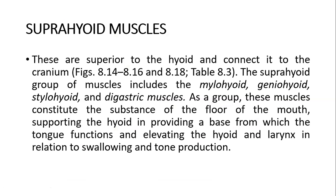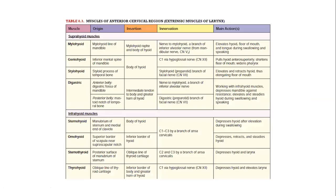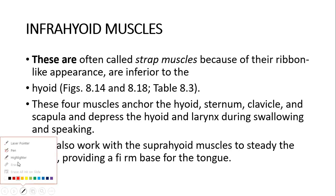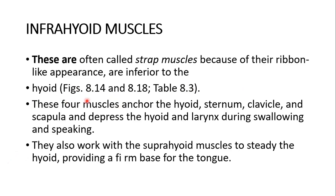So these are the suprahyoid muscles. You can go through this chart, and this is the infrahyoid muscles. For detail, with the precise attachments, you have to revise the anatomy of the hyoid bone — the various parts: body, greater cornu, lesser cornu — and the attachments of origin and insertion of the muscle, and it will be easier for you. The infrahyoid muscles are also called strap muscles — because they look like a strap — also called 'strap muscles.' These four muscles anchor the hyoid to the sternum, clavicle, and scapula to depress the hyoid and the larynx for swallowing and speaking. One of the muscles is attached to the scapula. They also work with the suprahyoid muscles to steady the hyoid toward a firm base for the tongue.